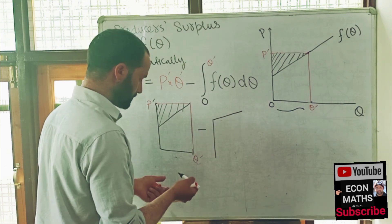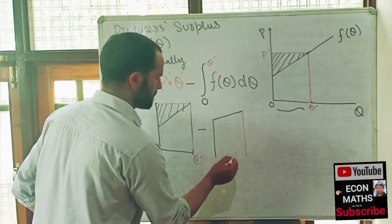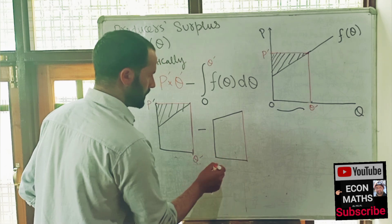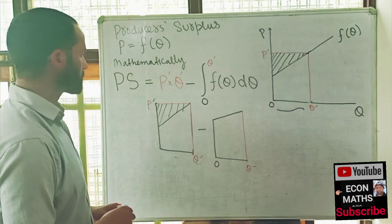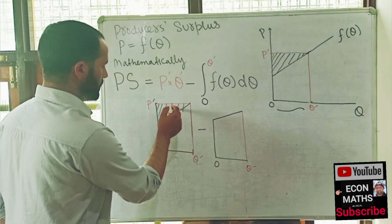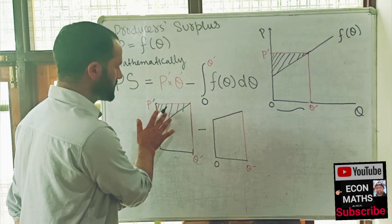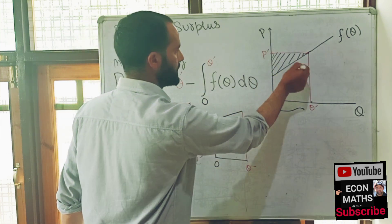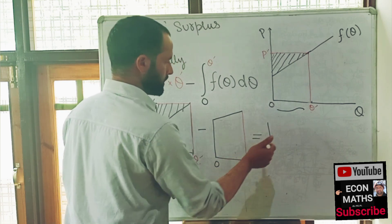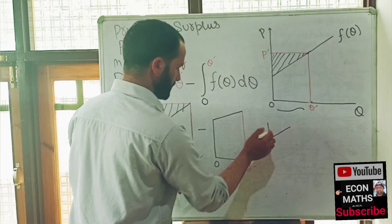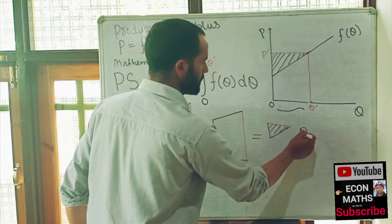We subtract this area under the supply curve from the total revenue rectangle, and what we get is this triangular-looking region, which represents the producer surplus.